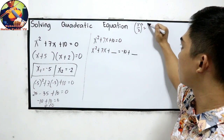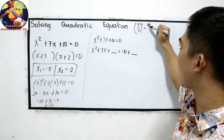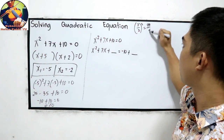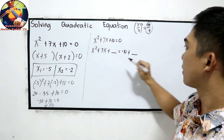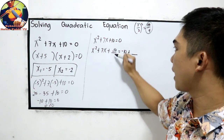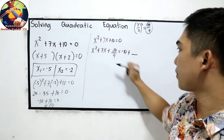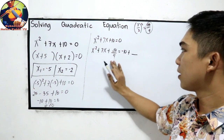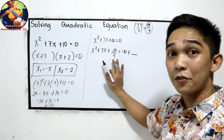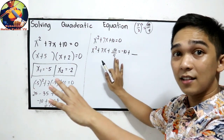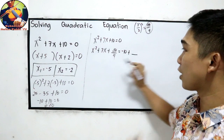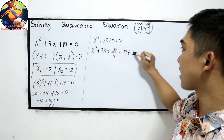7 squared is 49, over 2 squared which is 4, giving us 49 over 4. We add 49 over 4 to the left side, and we also add 49 over 4 to the right side.